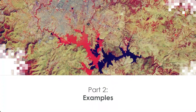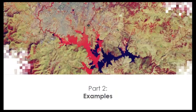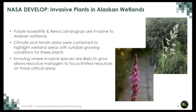I will now hand over the mic to Justin to share some examples of remote sensing of invasives. In some cases, it is impractical to directly map invasive species. In these cases, it may be possible to use information about the growing conditions favorable to the invasive species to map areas at risk for the establishment of invasives. Here, two species were identified and their potential range map was derived from terrain and climate data across a large area of the Alaskan wetlands. This information allows resource managers to prioritize their efforts on the highest risk areas.